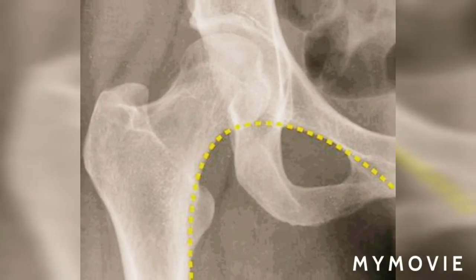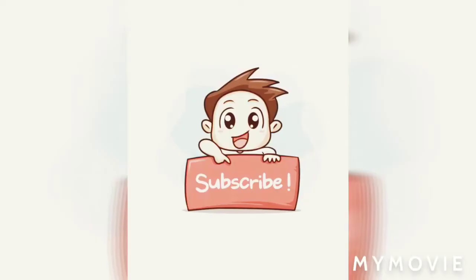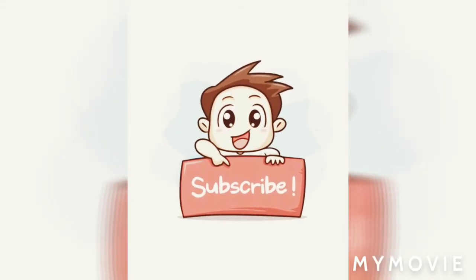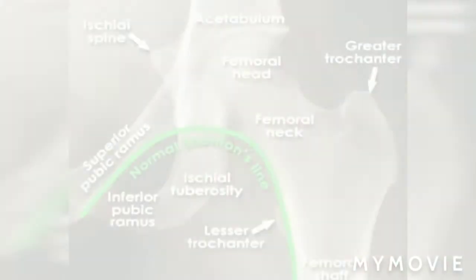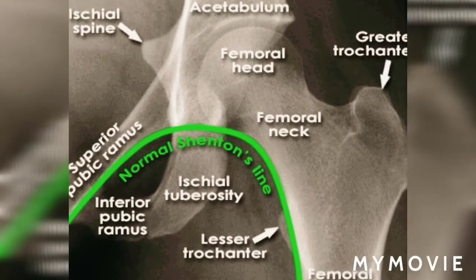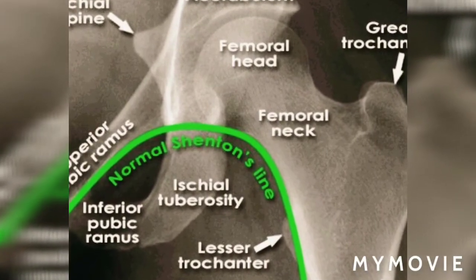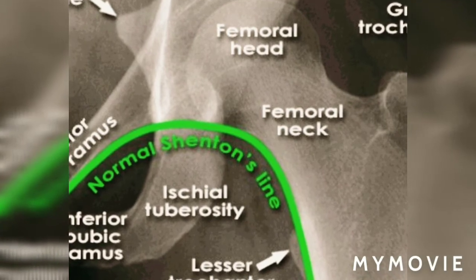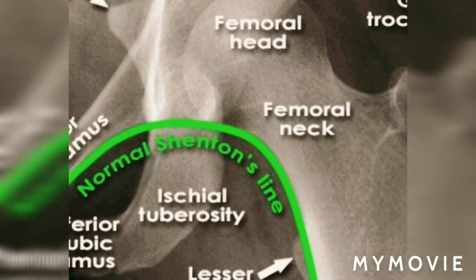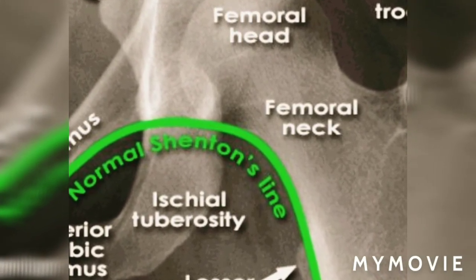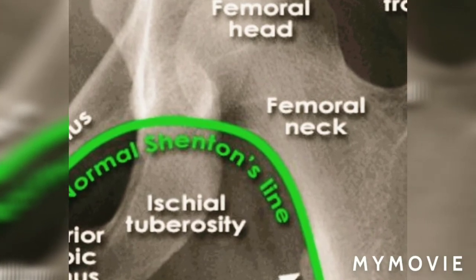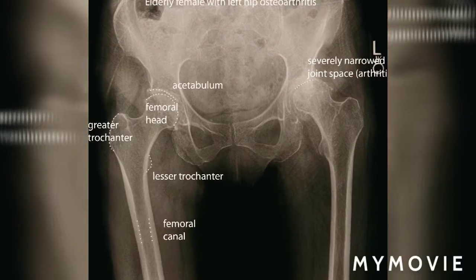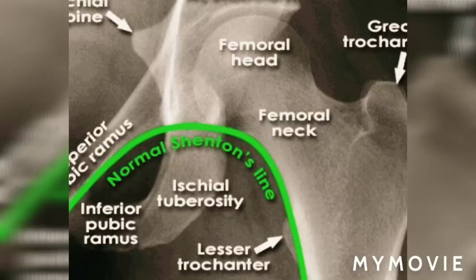A Shenton line is an imaginary curved line drawn along the inferior border of the superior pubic ramus — that is, the superior border of the obturator foramen — and along the inferior medial border of the neck of femur. This line should be continuous and smooth.